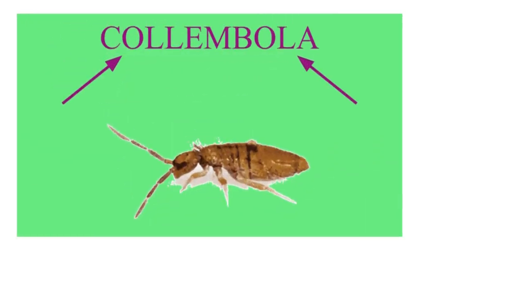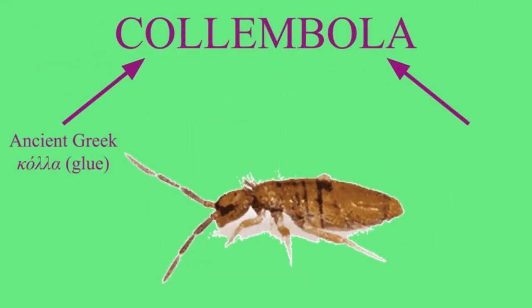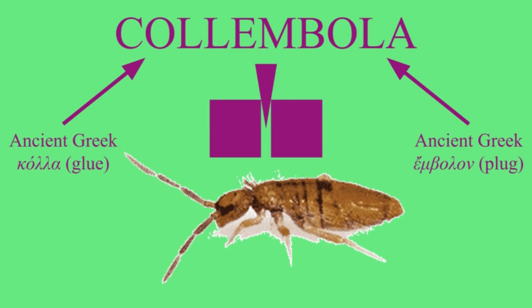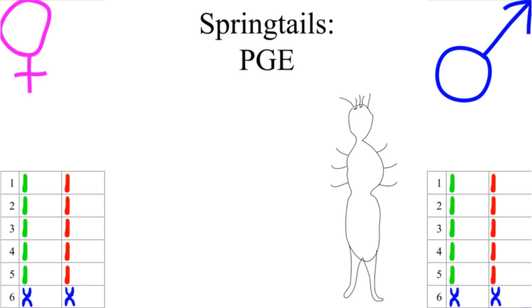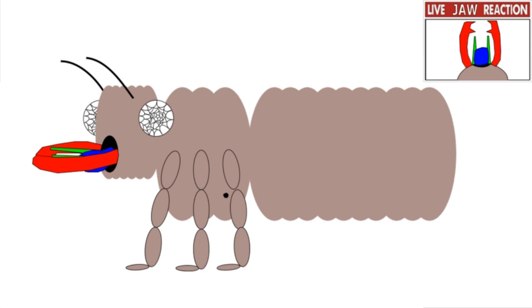We kick things off with Collembola. Kola means glue, a word we've encountered before, and embula means that which has been inserted, a wedge, peg, or plug. When we last saw the springtails, they were an example of paternal genome elimination, and that's one of their many synapomorphies. Their English namesake is the furka, this split extension from the abdomen, the fourth of five segments. This can be tensed up, storing energy, until bang, springtail. Easy.